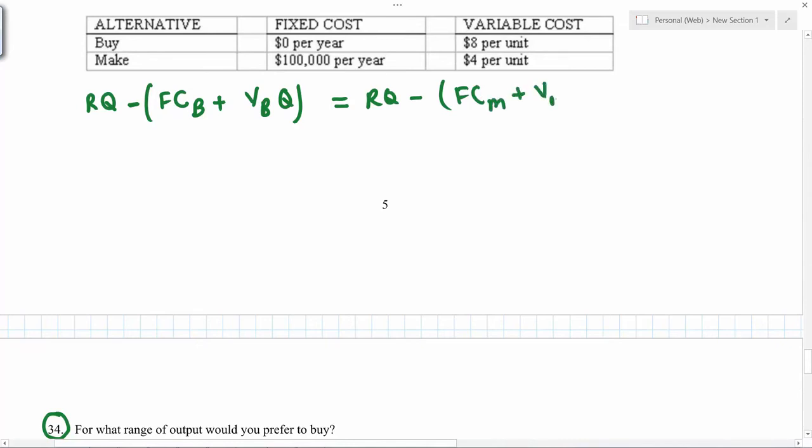So if you simplify this, this is the same as fixed cost for the buy decision plus variable cost for the buy decision times Q is equal to fixed cost for the make decision plus variable cost for the make decision times Q.